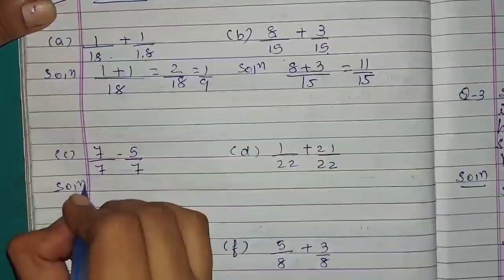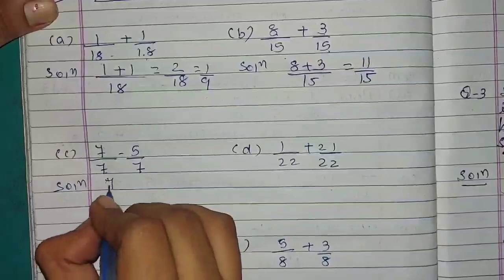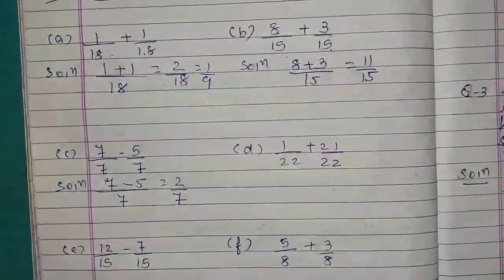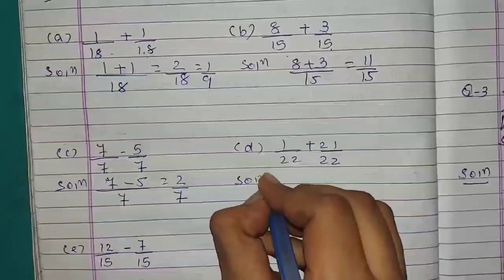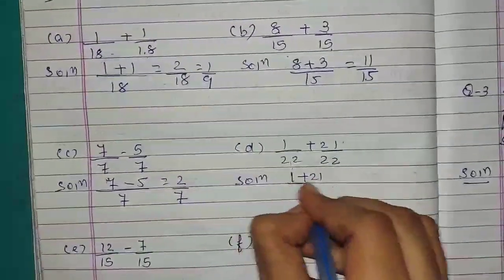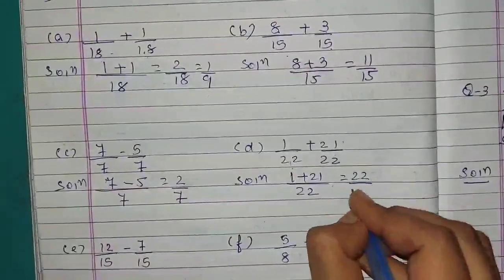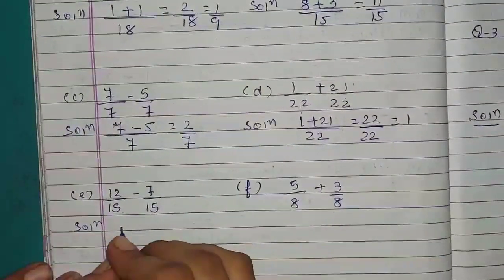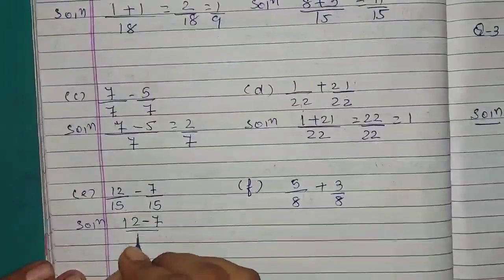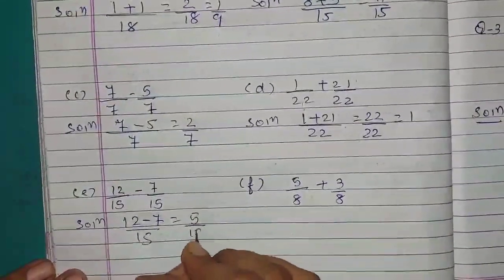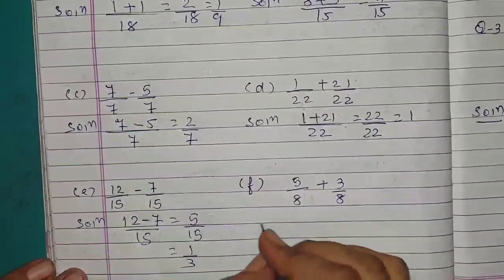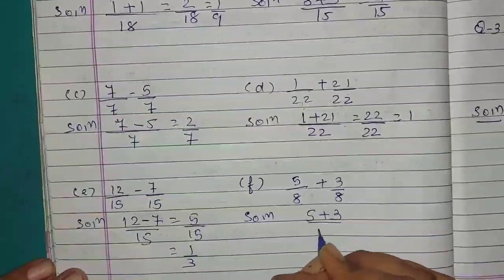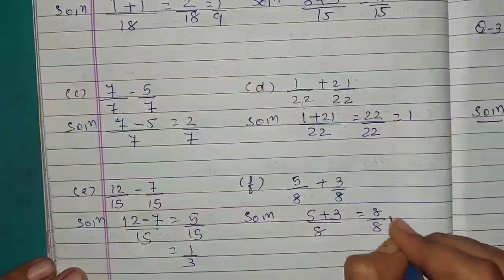Number C: 7 upon 7 minus 5 upon 7. Like fractions, same denominator, so 7 minus 5 upon 7 equals 2 upon 7. Number D: 1 upon 22 plus 21 upon 22. So 1 plus 21 upon 22 equals 22 upon 22, which equals 1. Question E: 12 upon 15 minus 7 upon 15. Like fractions — 12 minus 7 equals 5 upon 15, which equals 1 upon 3 in simplest form. Number F: 5 upon 8 plus 3 upon 8. So 5 plus 3 equals 8 upon 8, which equals 1.